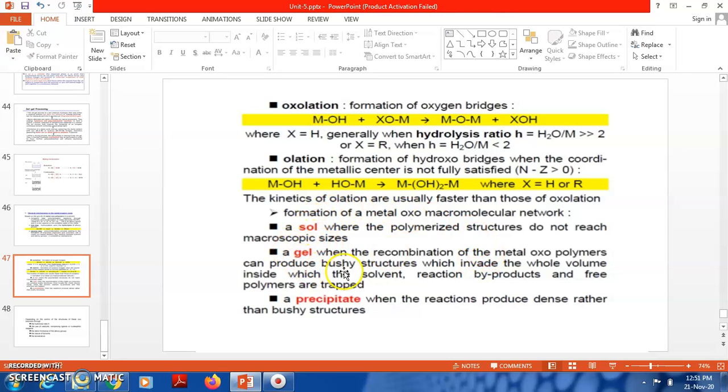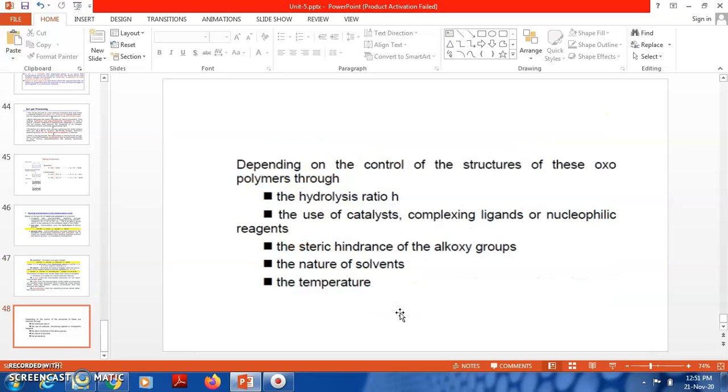When the recombination of the metal-oxo polymers can produce a bushy structure which inverts the whole volume inside which the solvent, reaction byproducts, and free polymers are trapped, a gel is formed. A precipitate is when the reaction produces dense rather than bushy structure.